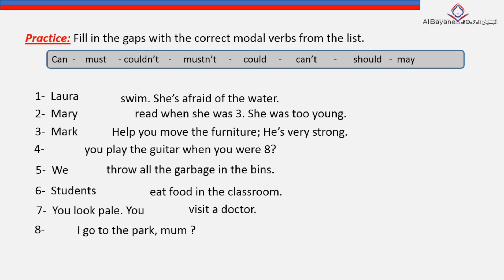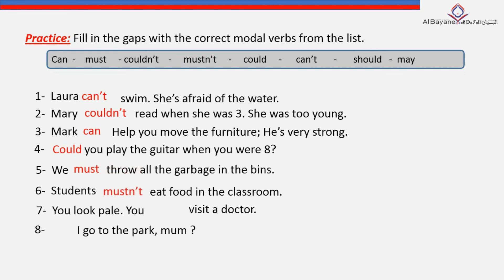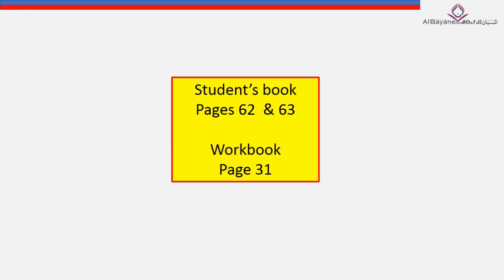Now let's correct. 1. Laura can't swim — she's afraid of the water. 2. Mary couldn't read when she was 3 — she was too young. 3. Mark can help you move the furniture — he's very strong. 4. Could you play the guitar when you were 8? 5. We must throw all the garbage in the bins. 6. Students mustn't eat food in the classroom. 7. You look pale — you should visit a doctor. 8. May I go to the park, mom? For more practice, go to pages 62 and 63 in the student's book and page 31 in the workbook.